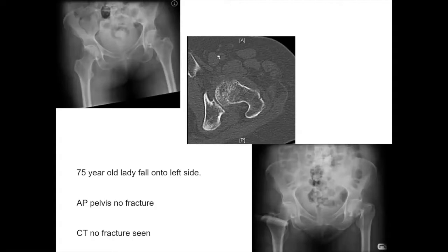We now have a very low threshold to CT patients who have fallen on their side. Here's another case of a 75-year-old lady who fell onto her left hip — in retrospect not normal, but called normal at the time. Even CT couldn't confirm a displaced fracture. The ideal imaging modality is MRI, because you get marrow signal changes and can't miss them, but availability in the acute setting is the issue. Twelve days later she hadn't mobilised; we repeated the x-ray and the fracture — which was there all along, non-displaced — had now become displaced.